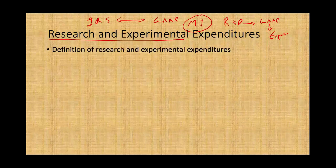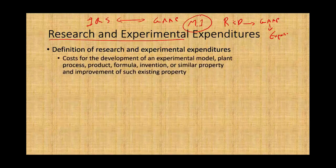What's the definition of research and experimental expenditure? It's cost for the development of an experimental model, plan, process, product, formula, invention, or similar property — and improvement of such existing property. It can also include the cost of obtaining a patent, such as attorney's fees, patent application costs, and any type of R&D or laboratory costs.